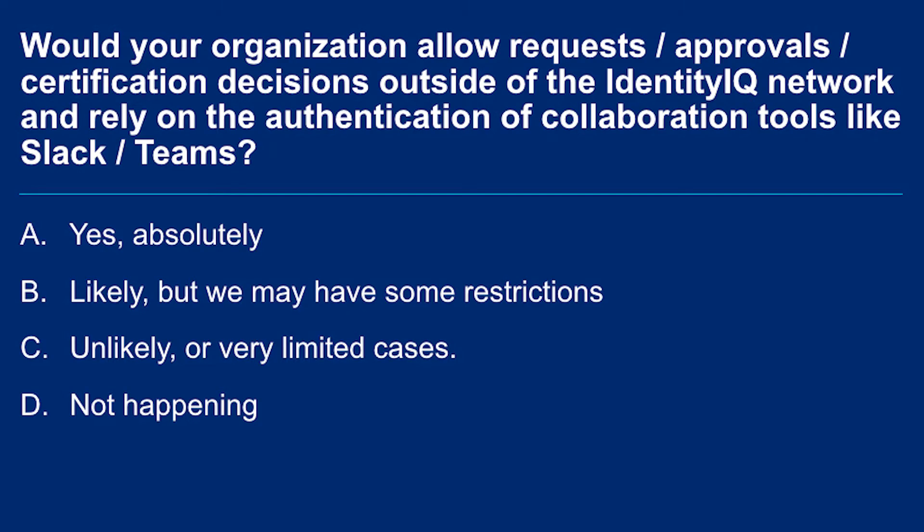Now that we've introduced notifications, we have a poll question on additional functionality within Slack or Microsoft Teams going forward. Would your organization allow requests, approvals, or certification decisions outside of the Identity IQ network and rely on the authentication of collaboration tools like Slack and Teams? Options are: yes, likely, unlikely, or not interested at this time — continuing to rely on Identity IQ for authentication.